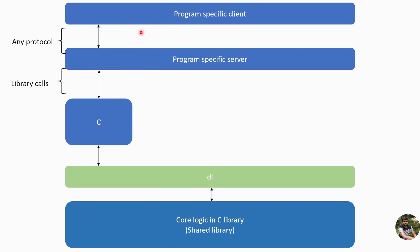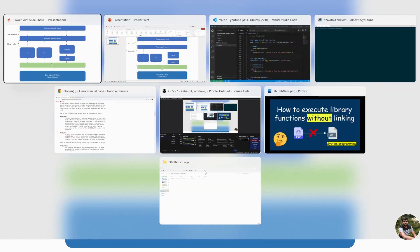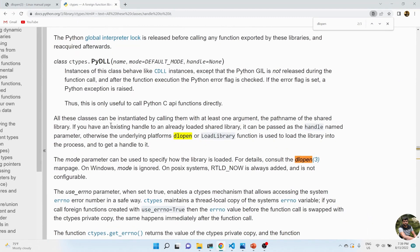The big advantage is that other programming languages can do the same thing. Python, for example, uses ctypes, which internally uses dlopen to call shared libraries. The ctypes documentation states: 'the underlying platform dlopen or LoadLibrary function is used' — dlopen for Linux and LoadLibrary for Windows.